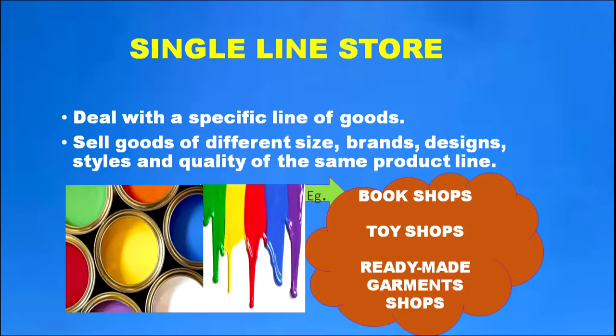Under fixed shop retailing, we have single line stores which deal with a specific line of goods. Single line stores sell goods of different sizes, brands, designs, styles, and quality within the same product line. Examples include shops selling only books, shops dealing only with toys, and stores selling ladies' garments or children's garments.